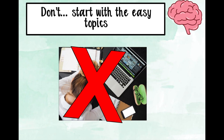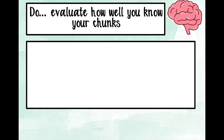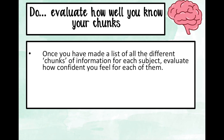Don't start with the easy topics. When building a revision timetable it can be overwhelming, and your brain naturally wants to start with what you already know well — that's a survival strategy. Don't do that; we want to be efficient. Instead, evaluate how well you know each chunk using a traffic light system: red, amber, or green. Red means you don't know it at all, amber means you know it a bit, green means you know it really well. Be honest when evaluating your confidence for each topic.